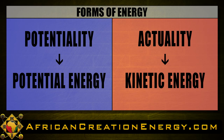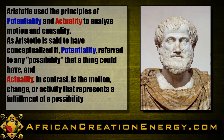Just as modern science evolved from proto-science, the modern scientific concepts of potential energy and kinetic energy evolved from the proto-scientific concepts of actuality and potentiality. We can trace the origins of these concepts as the dichotomy between actuality and potentiality attributed to the Greek philosopher Aristotle, who is said to have lived between 384 and 322 BC. These philosophical principles were the precursors to the modern scientific concepts of kinetic energy and potential energy respectively. Aristotle used the principles of potentiality and actuality to analyze motion and causality.